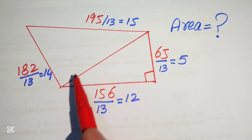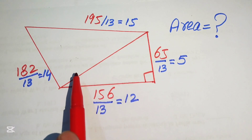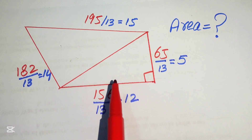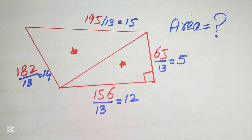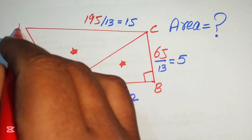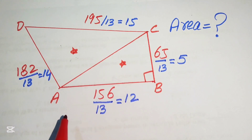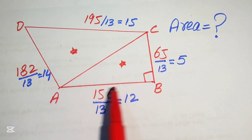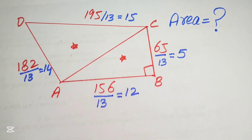We join two opposite vertices with a diagonal, which divides the quadrilateral into two triangles — the first triangle and the second triangle. We label the vertices A, B, C, and D. So ABCD is our quadrilateral, and we need to find the area of triangle ABC and the area of triangle ACD.